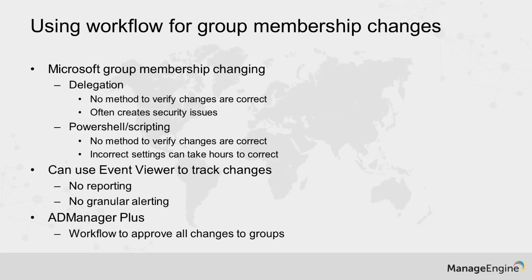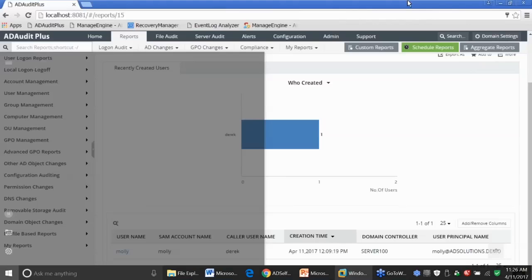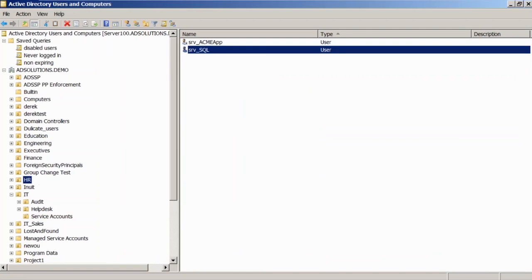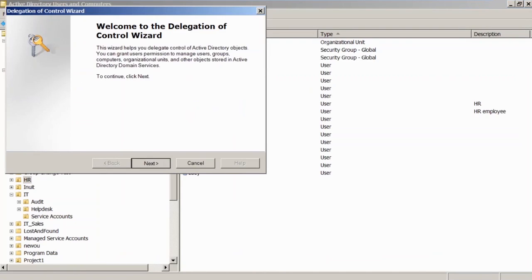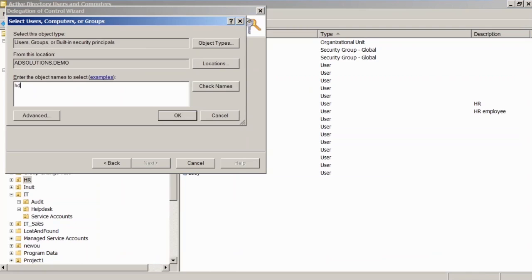Fourth tip: group membership changes. Because of the way Microsoft created Active Directory, we have an issue with creating messes — we grant too much group membership. You can give others group membership-changing capabilities through delegation, or use PowerShell and scripting to modify group membership. But if I delegate to someone in Active Directory the ability to change group membership — I'll come back here to Active Directory, pick an OU, run the Delegate Control wizard, and give the help desk the ability to modify the membership of a group — this is delegation.